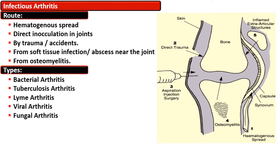Infection can also occur by extension from nearby osteomyelitis. The types of infectious arthritis include bacterial, tuberculosis, Lyme arthritis, viral arthritis, and fungal arthritis.